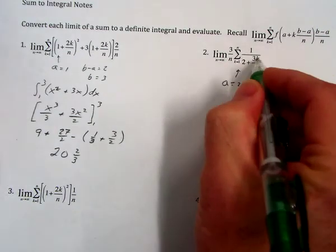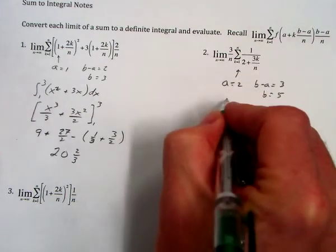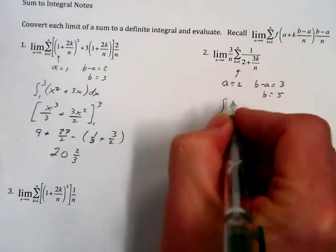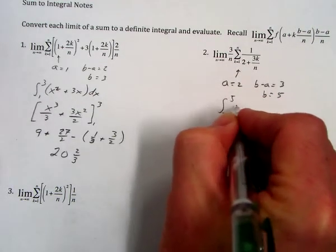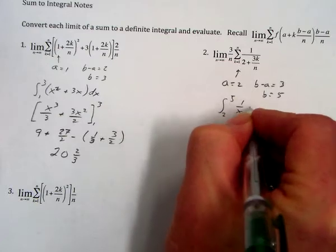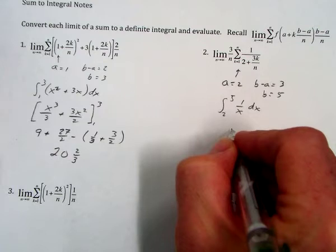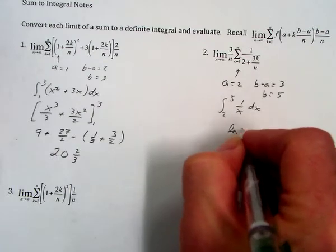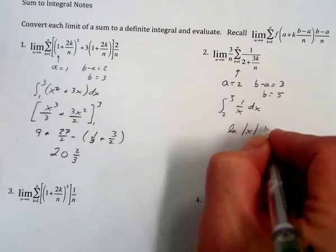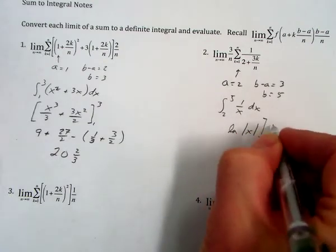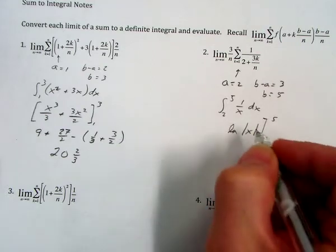Our function is going to be 1 over this x value. So we're going from 2 to 5 of 1 over x dx. When you evaluate that, we get the natural log of the absolute value of x evaluated from 2 to 5.